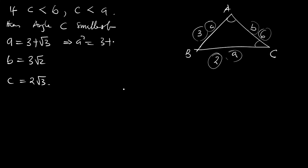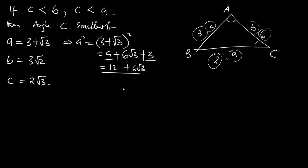A squared equals (3 plus root 3) squared, which gives us 9 plus 6 root 3 plus 3, so A squared equals 12 plus 6 root 3. Then B squared equals (3 root 2) squared, which gives us 9 times 2, which is 18.